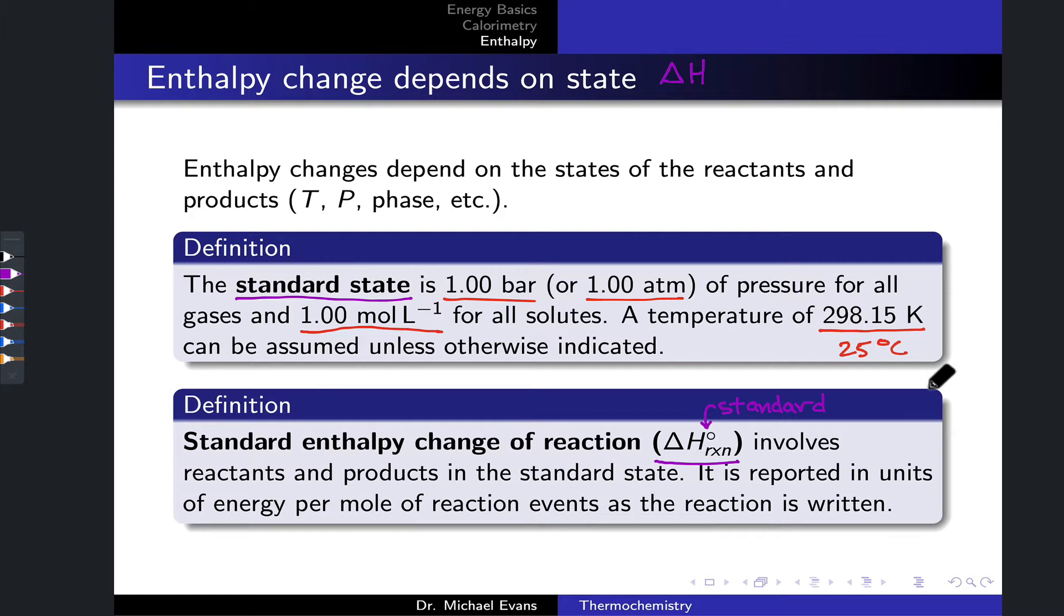There's basically a standardized process built into our definition of the standard enthalpy change of reaction. We take one mole per liter, one atmosphere of the reactants, and convert those to one mole per liter, one atmosphere of all the products. From the reactants in their standard states to the products in their standard states, that process is associated with this delta H of reaction standard value.